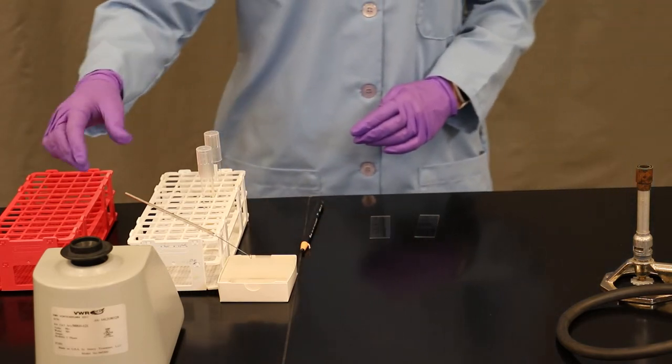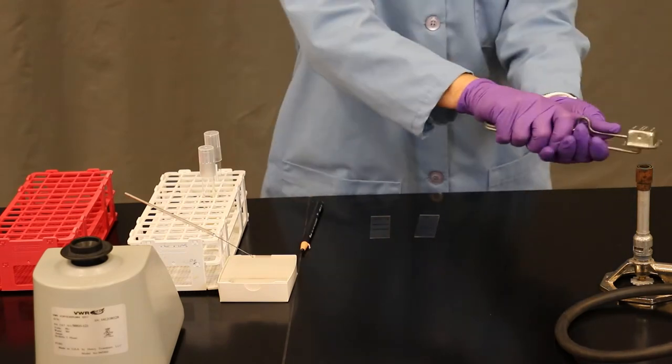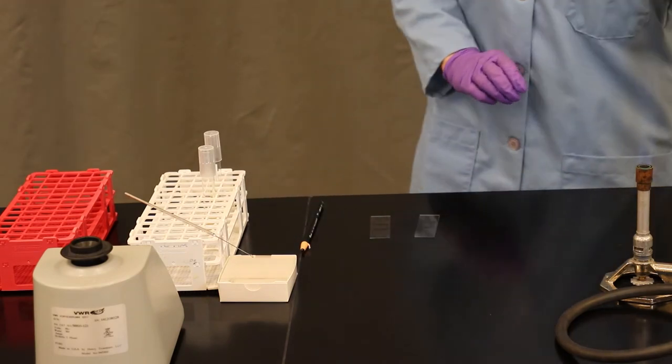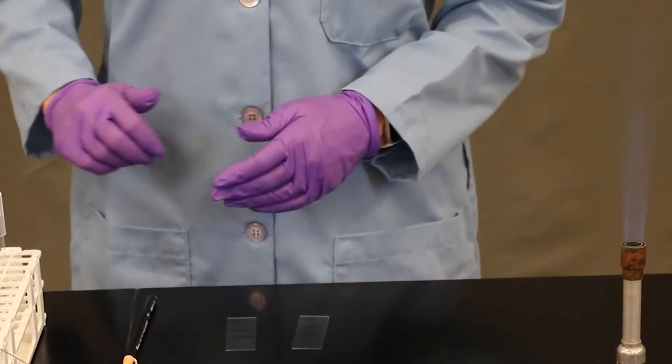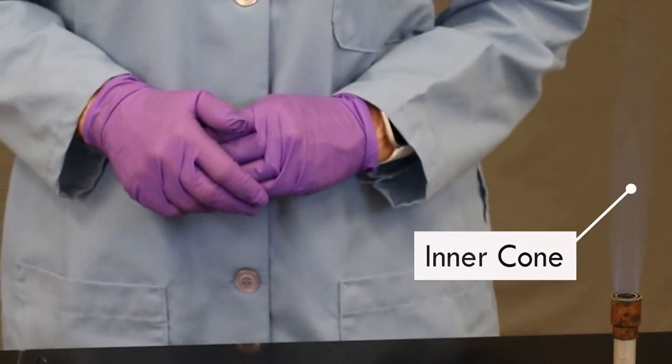Now it's time to get your Bunsen burner set. Turn on the gas valve. Your Bunsen burner should have two blue cones. The inner cone is the hottest portion and the portion you'll be working with.